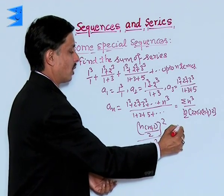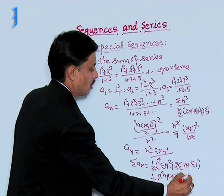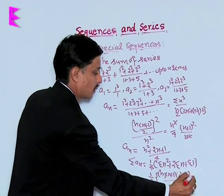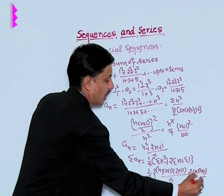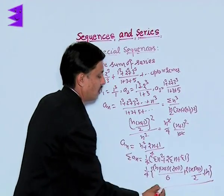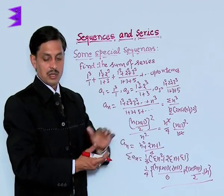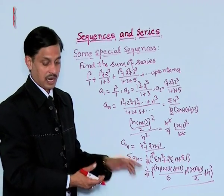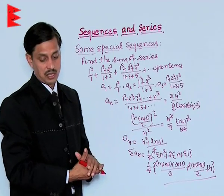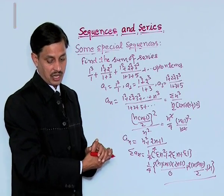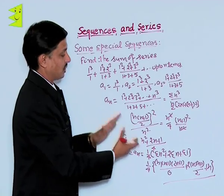We are coming to n square upon 2, 2n plus 1 upon 6, plus 2 sigma n means n into n plus 1 upon 2, plus sigma 1 means n. The simplification of this part will give us the final answer, but the procedure is explained to you as it is.